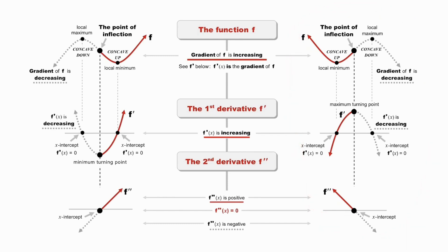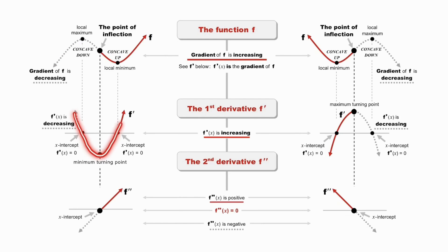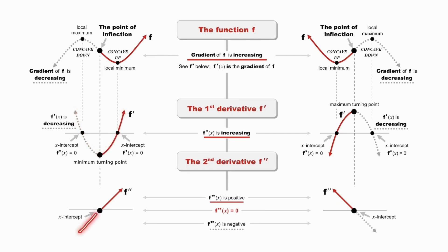If we look, first of all, my a value is positive on this cubic graph. When I take the derivative of a cubic graph, remember we subtract one from the index. So if I subtract one from the index of x cubed, I get a term in x squared — in other words, a parabola. So if my a value is positive in the cubic graph, in the derivative I'm going to get a parabola where my a value is positive. And when I take the derivative of that parabola, I will get a straight line where the gradient is positive.